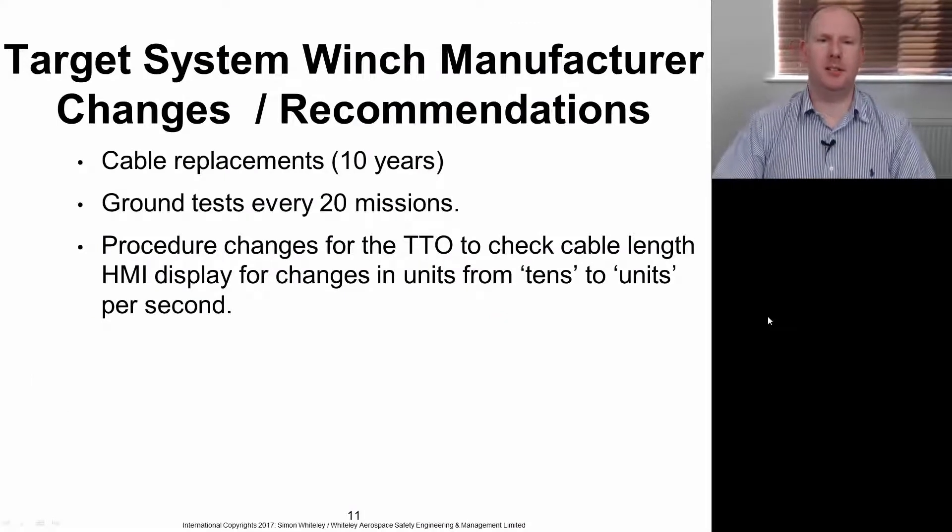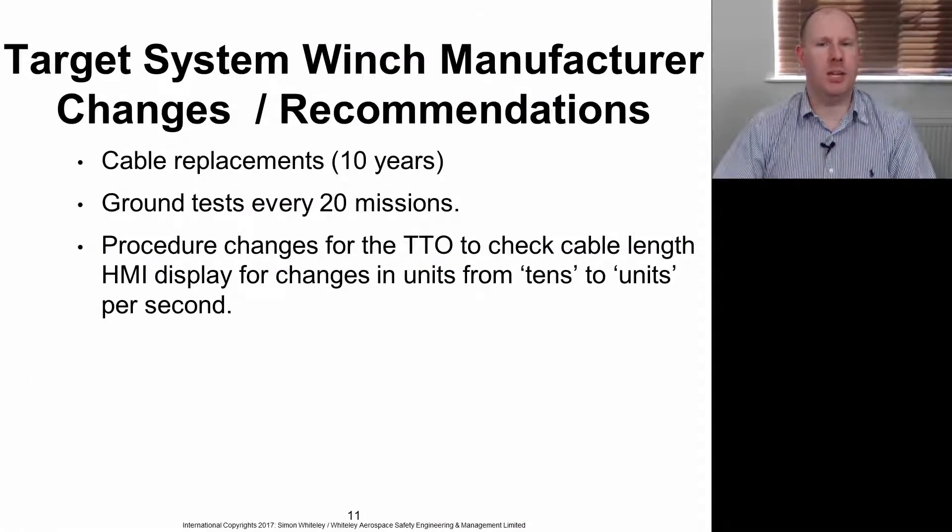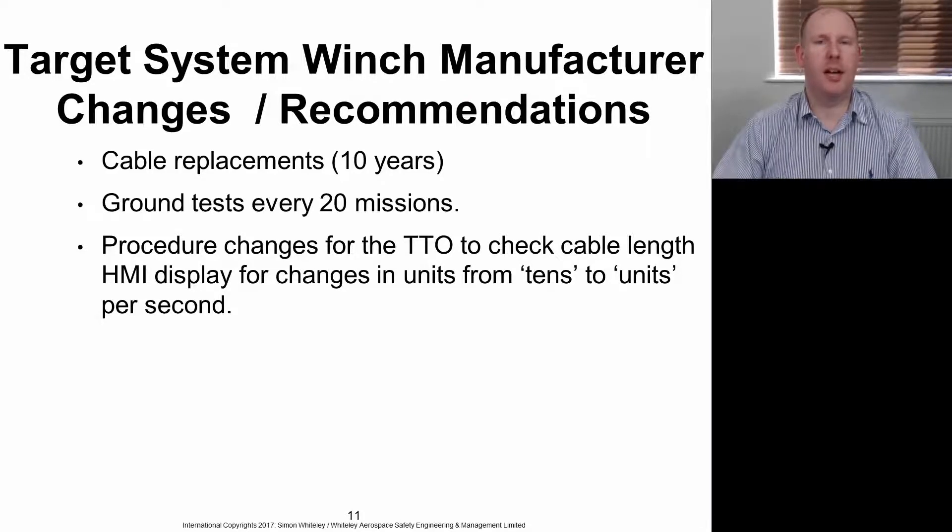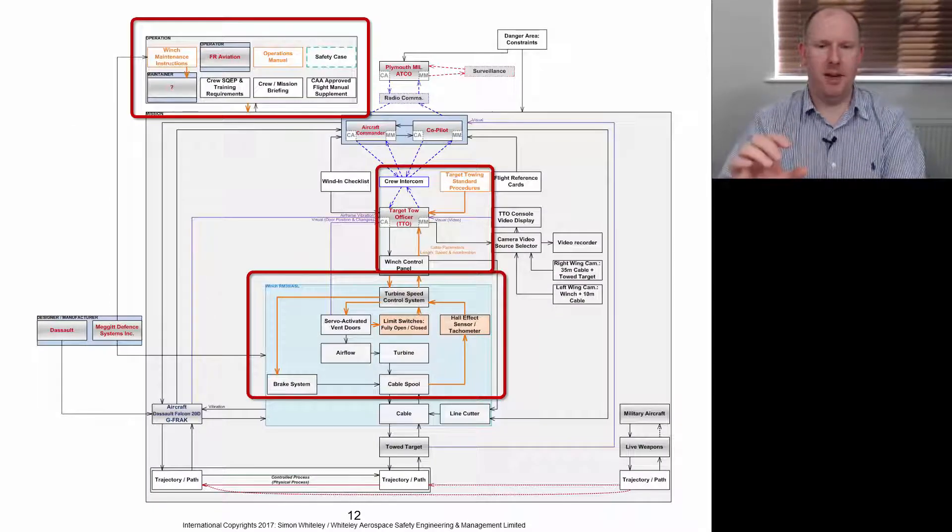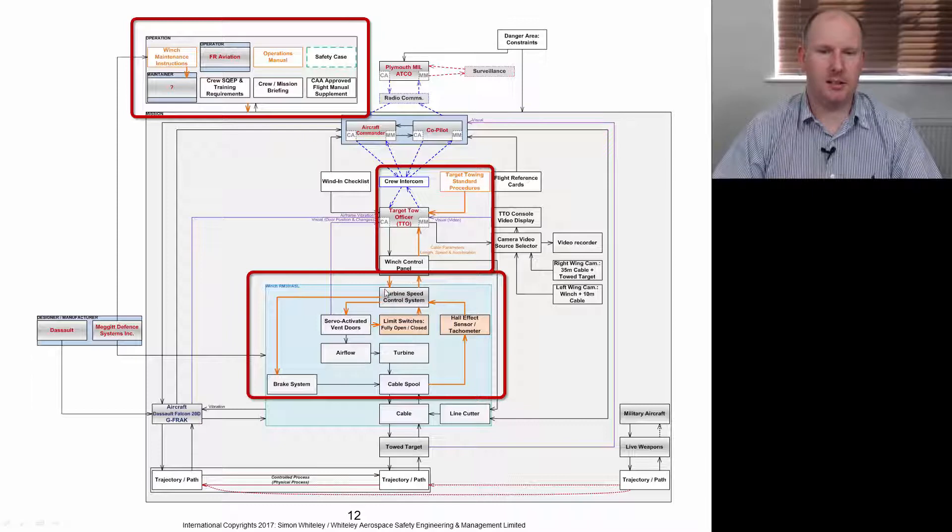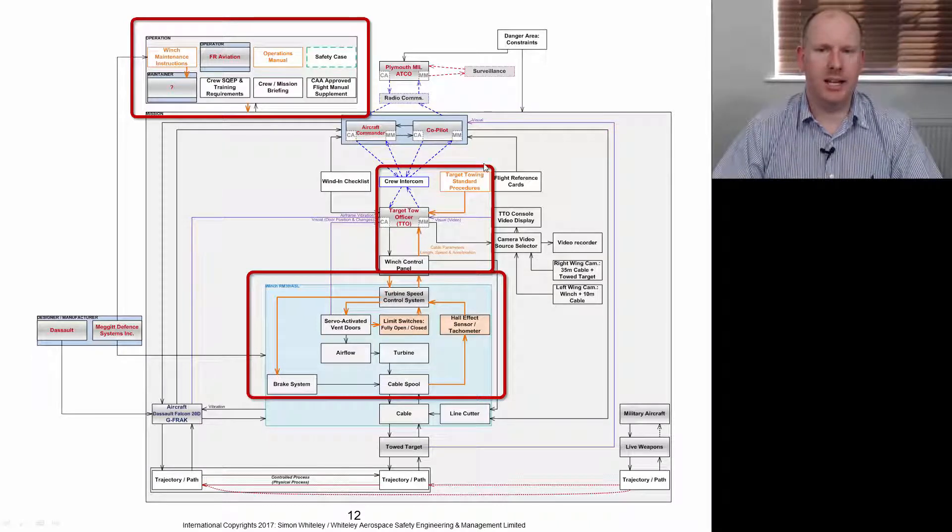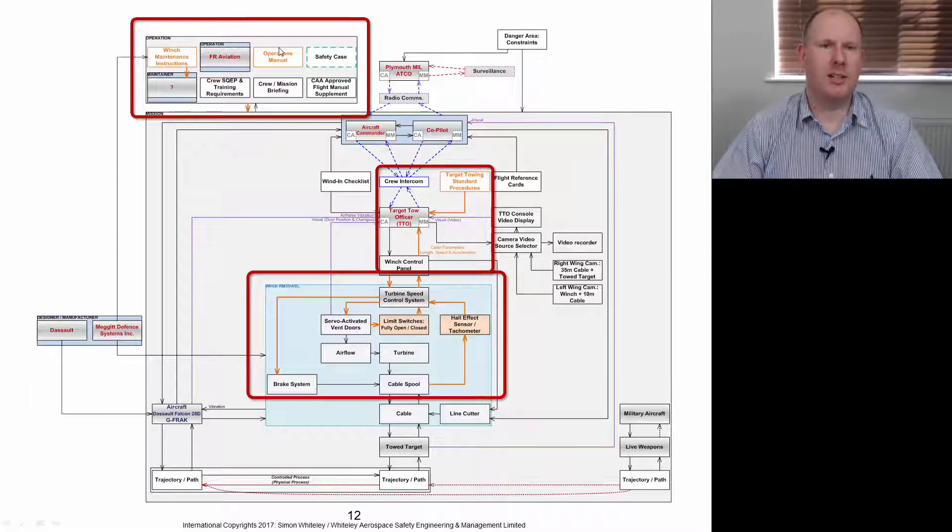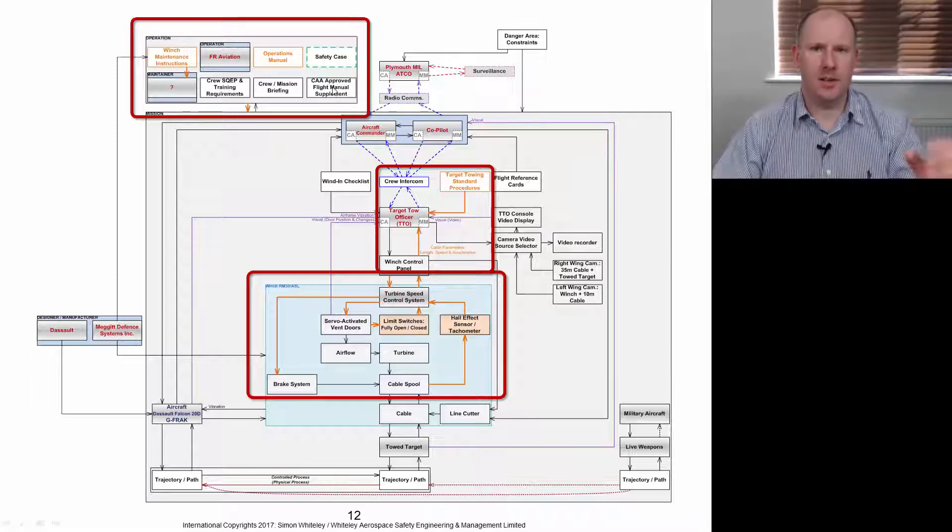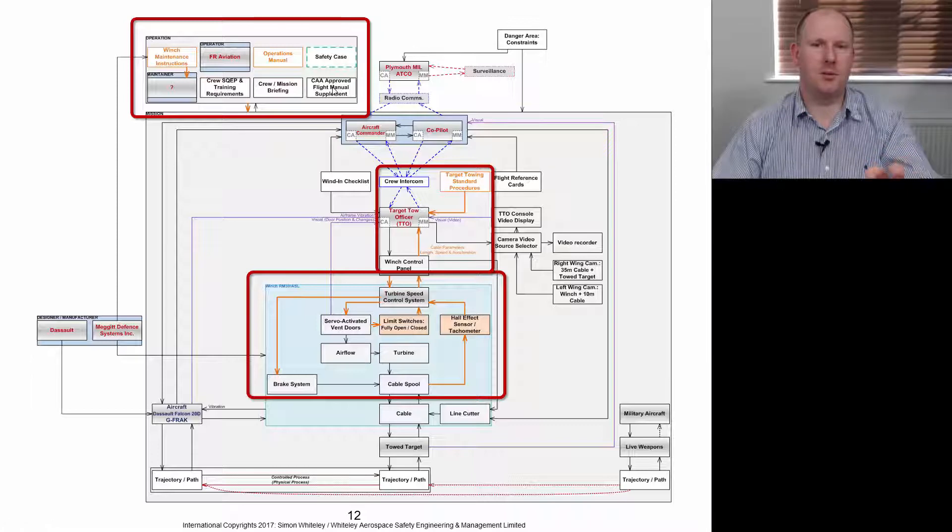In the aftermath of the incident, the target system winch manufacturer made some changes and recommendations. These were to replace the cable harnesses every 10 years, to do some ground tests every 20 missions, but also to change the procedures for the TTO to check the cable length HMI human-machine interface display for changes in the units from tens of meters to units per second. That essentially affects these three parts of the control structure: the technical aspect of changing the cables, the changes to procedures, the target tow officer keeping an eye on the cable parameters, changes to the operations manual, and then the maintenance instructions.